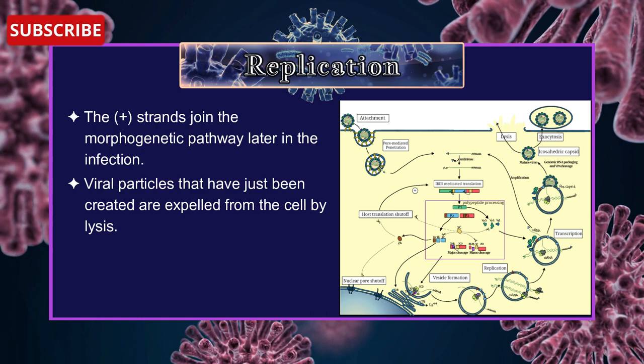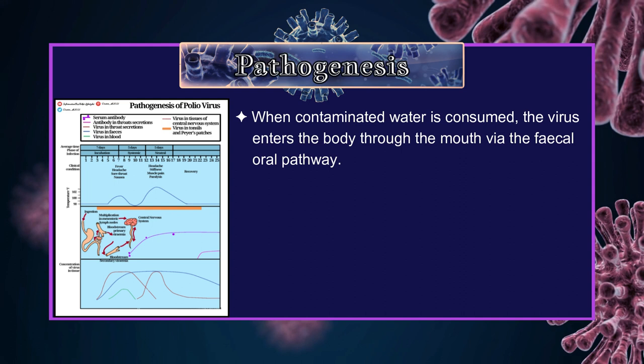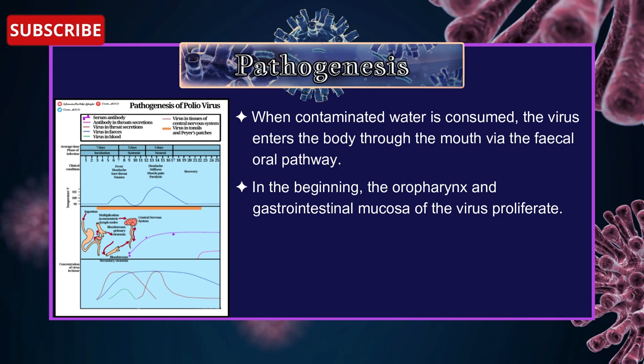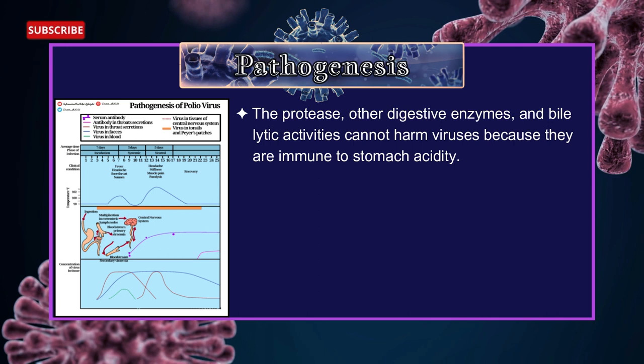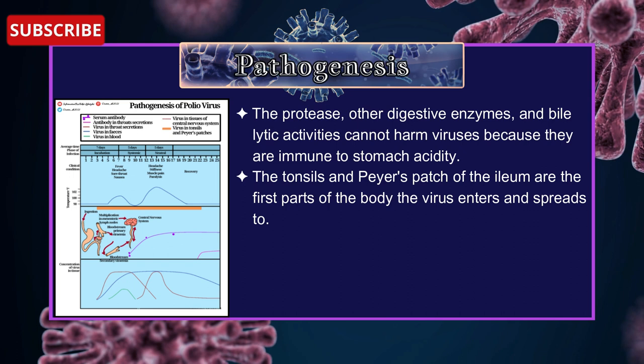Next is the pathogenesis of poliovirus. When contaminated water is consumed, the virus enters the body through the mouth via the fecal-oral pathway. In the beginning, the oropharynx and gastrointestinal mucosa are where the virus proliferates. Before symptoms appear, the virus is frequently found in the pharynx and stools. Viruses are immune to stomach acidity — proteases, other digestive enzymes, and bile cannot harm them. The tonsils and Peyer's patches of the ileum are the first parts of the body the virus enters and spreads to.